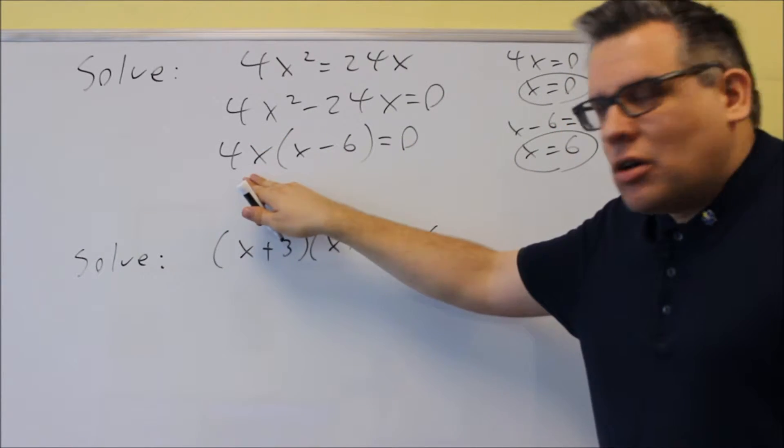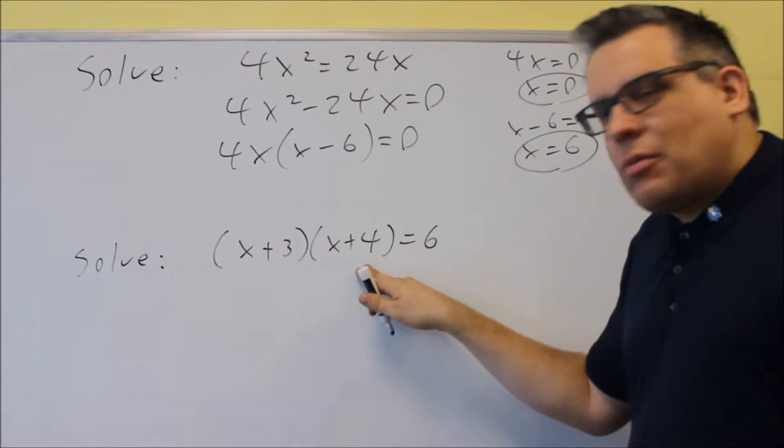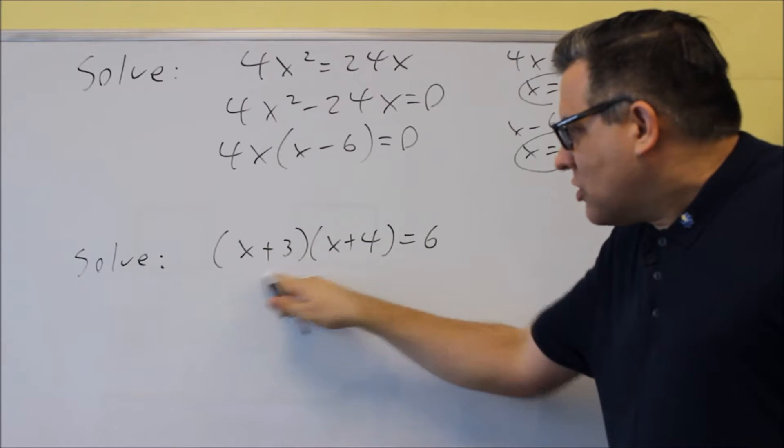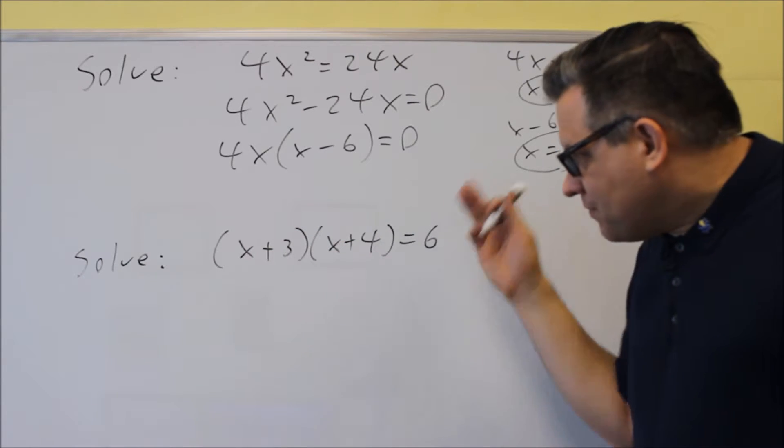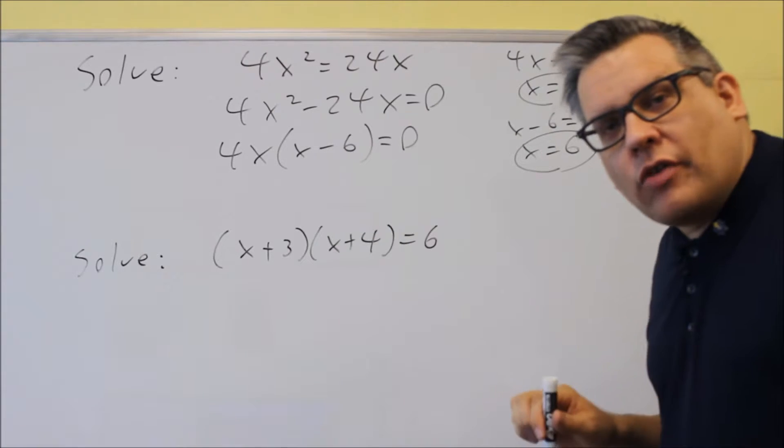If this section is zero, or this section is zero, the whole thing is going to be zero. But I can't say that about six, if I set that equal to six and this equal to six, then that's not going to work, it's not going to give me the correct answer. So here's the right way of doing that one.